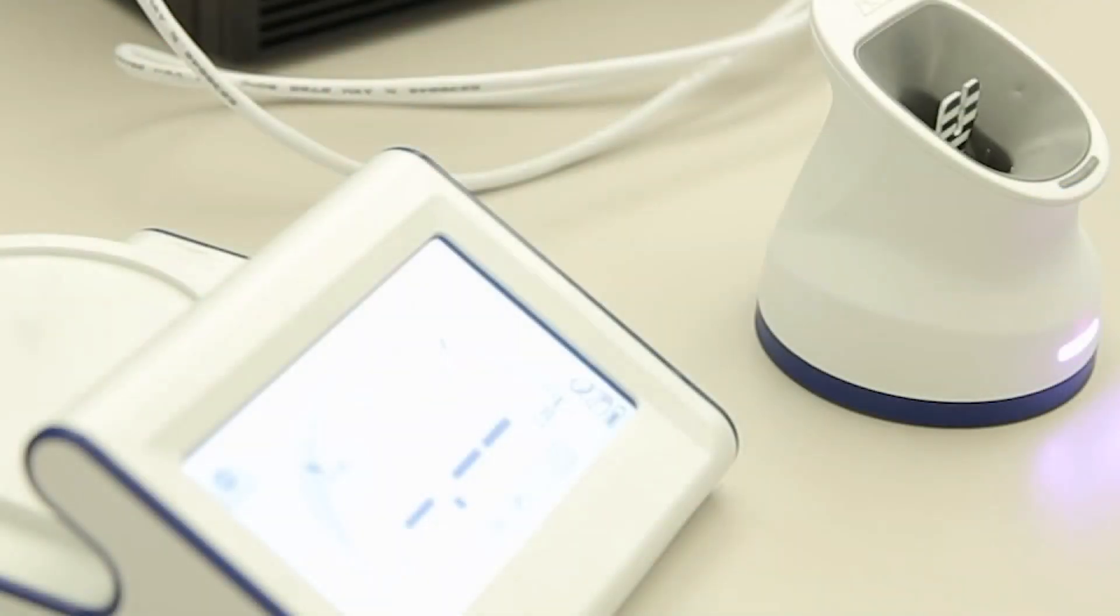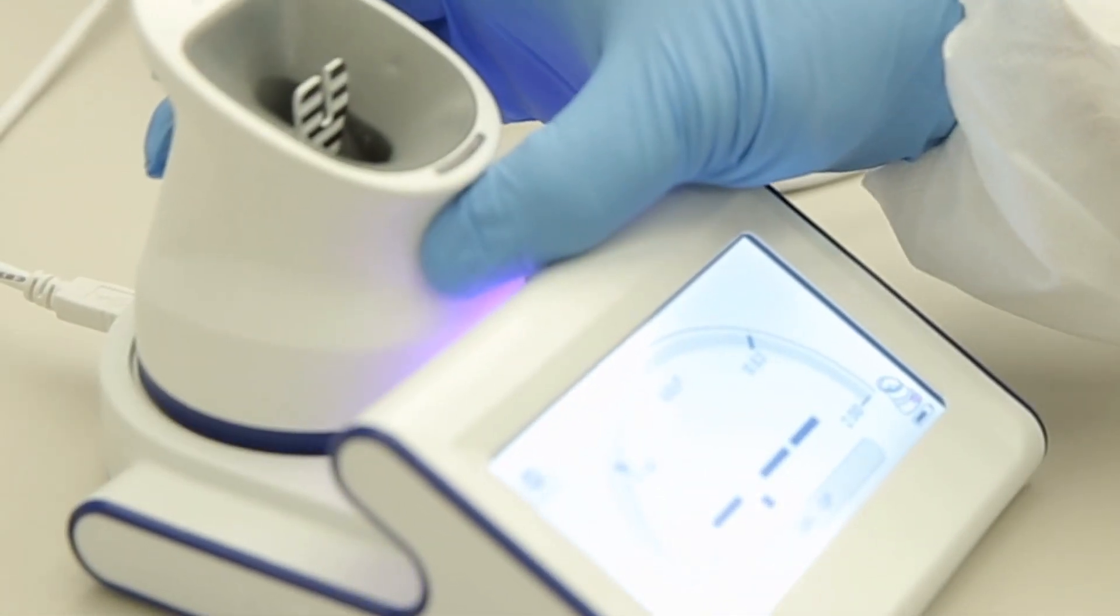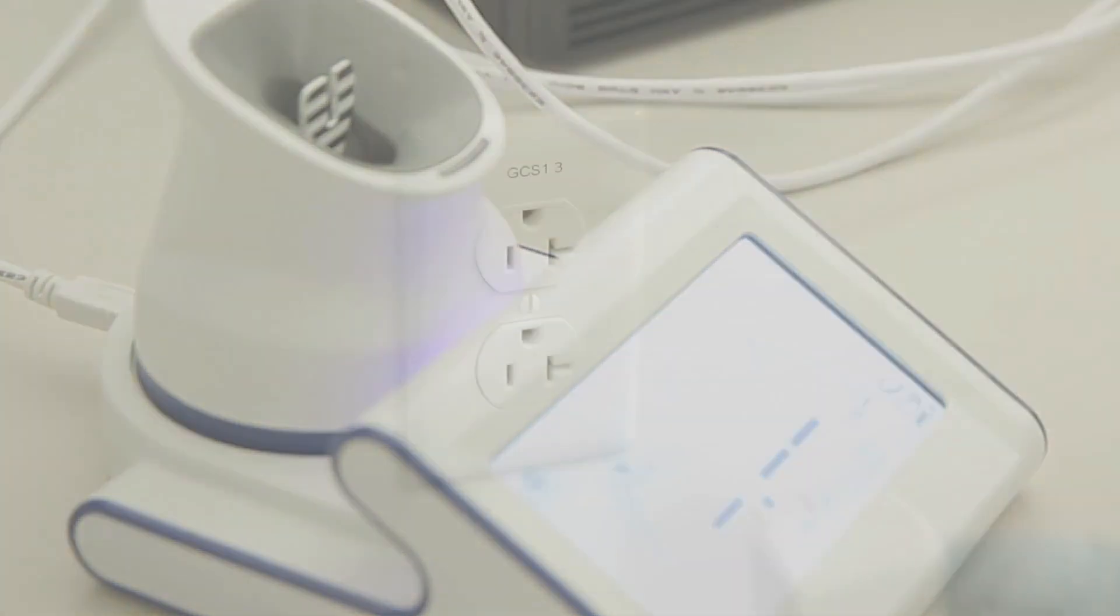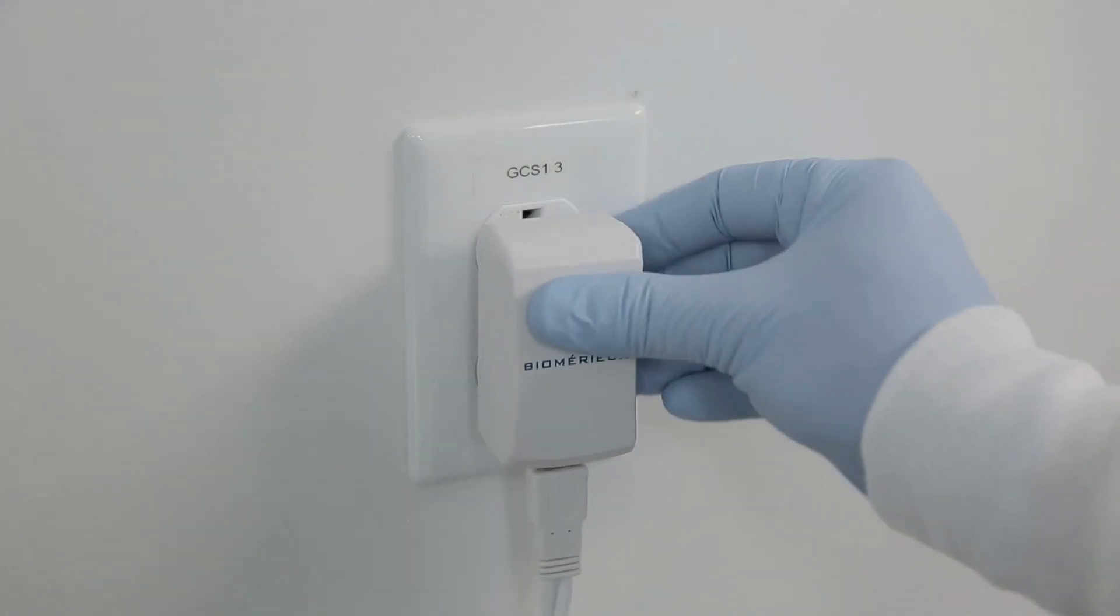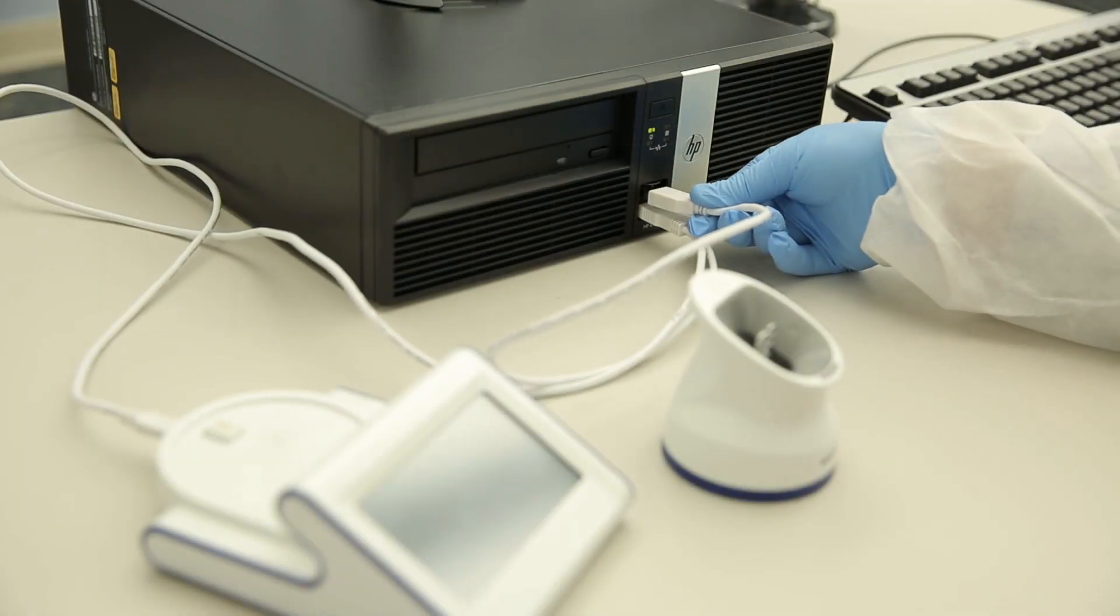The setup of Vitek Densicek is swift and simple. Charge the Vitek Densicek pod by sitting it on the display base and plugging the base directly to AC power using the provided AC power adapter, or by connecting the display base to the PC using the USB cable.